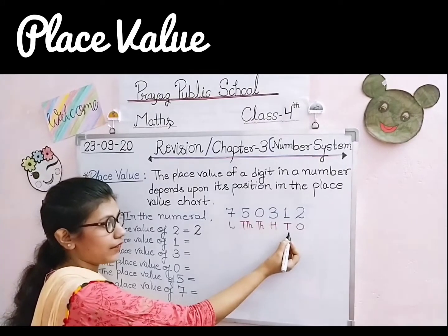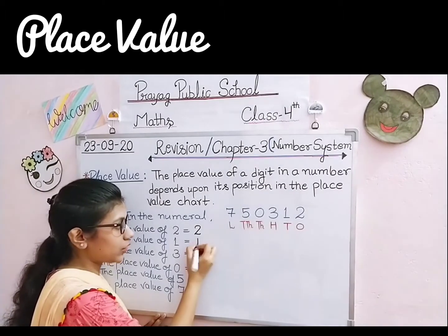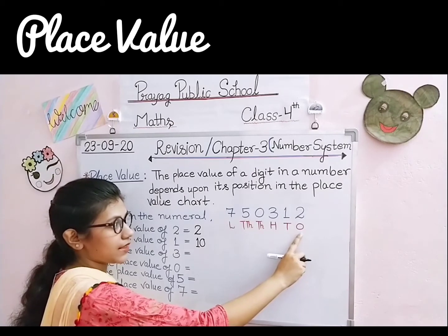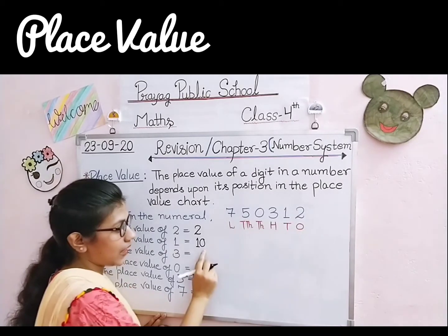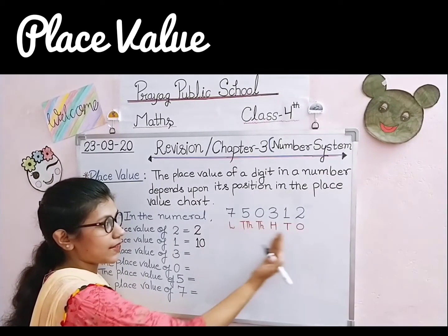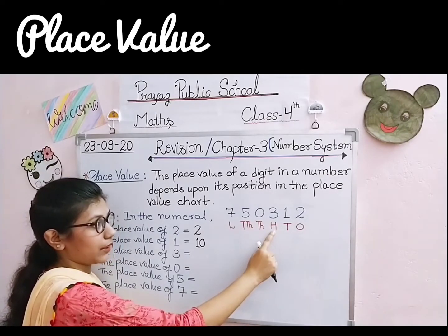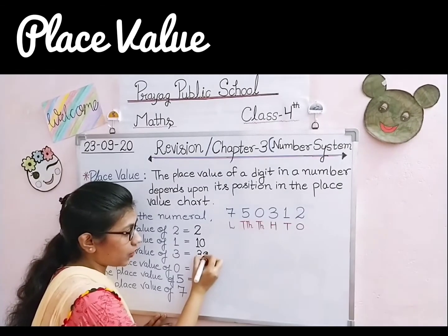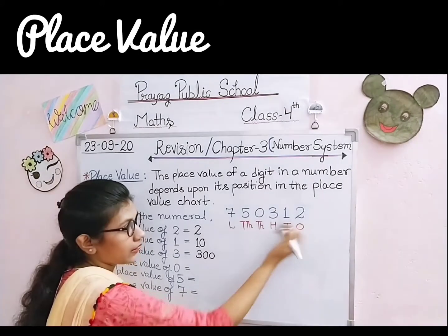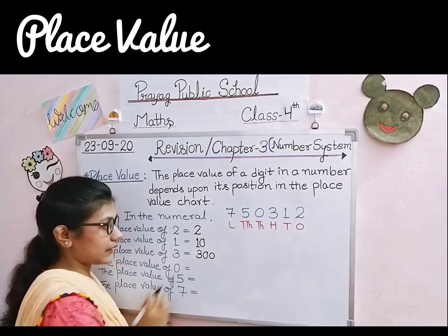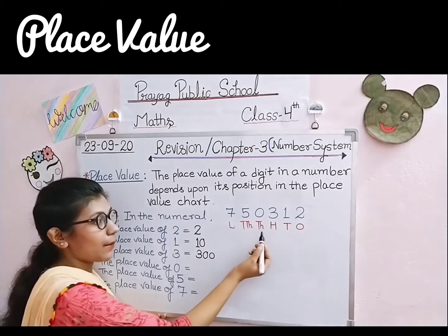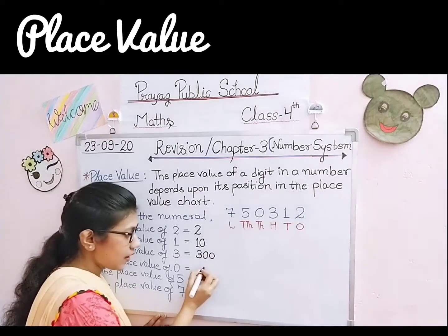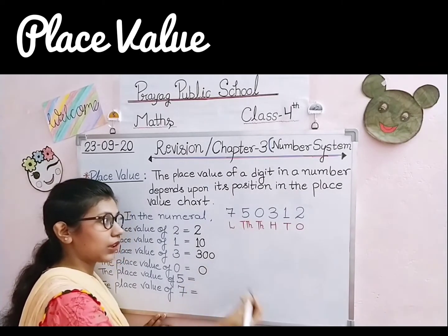जैसे हम place बढ़ाते जाएंगे, वैसे zeros भी बढ़ाते जाएंगे। अब 100 के place को देखते हैं — 3 की place value क्या है? 300 के place पे है, और 3 को हम 2 zeros के साथ लिखेंगे, यानी 300। Now, the place value of 0 — हमें याद रखना है कि 0 किसी भी place पर क्यों न हो, 0 की place value always 0 होगी। चाहे single 0 लिखो या 2 times, 3 times — 0 means 0।